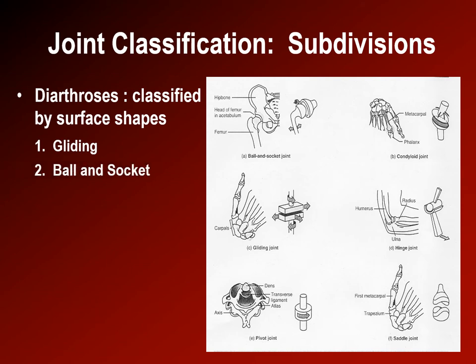Ball-and-socket joints are very mobile and meant to move in all directions, including the glenohumeral joint of the shoulder and the hip joint. Condyloid joints are meant to move mainly in one direction and are characterized by a condylus — the Latin word for knuckle — so if there's a knuckle-shaped projection, like in the knee or the interphalangeal joints of the fingers, it's called a condyloid joint.